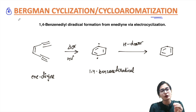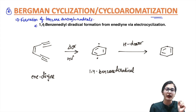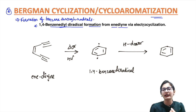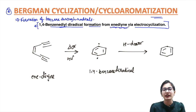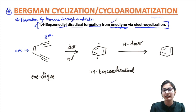In this video we will first understand what is the Bergman cyclization, do a previous year question on it, and also do some important questions which might get asked in the future. This reaction is basically the formation of benzene through radicals. The first thing we are going to see is 1,4-benzene diradical formation from an endiyne via electrocyclization.